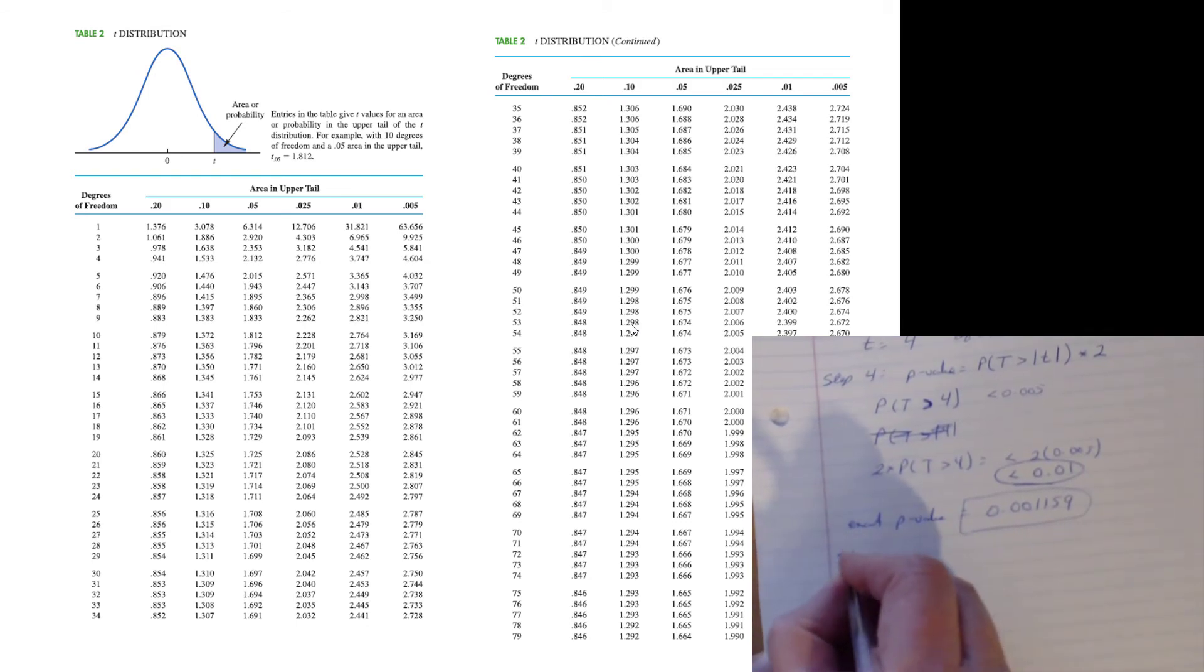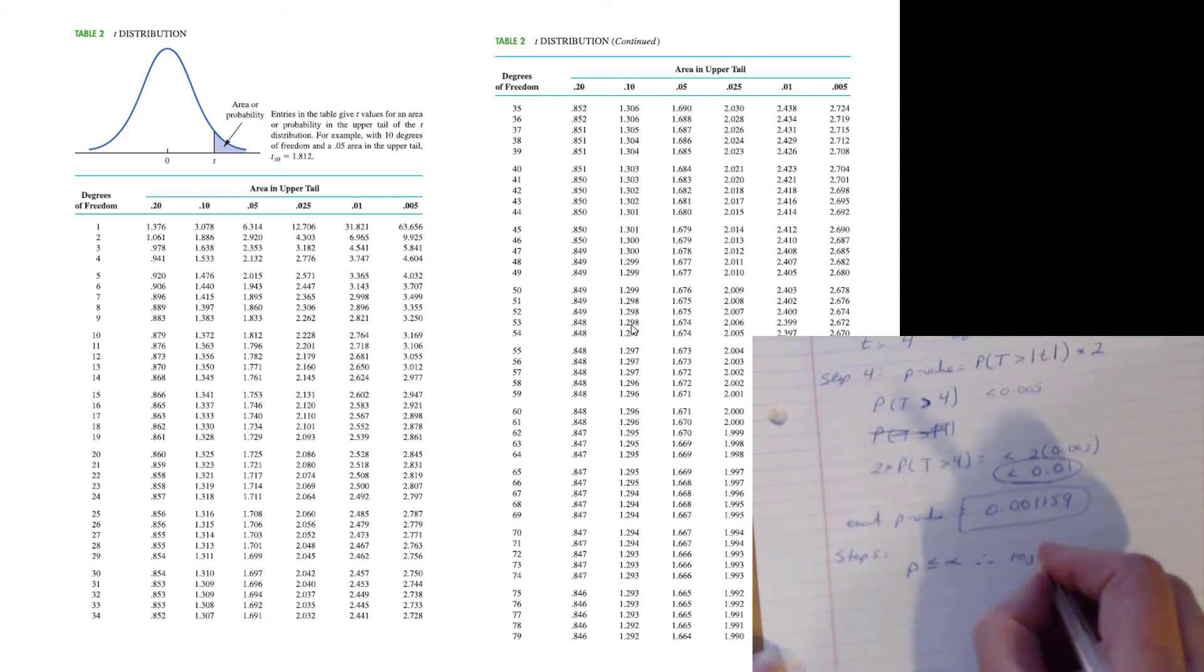Step 5 is unchanged regardless of which approach we use. The p-value in this case is definitely less than or equal to alpha - both are less than 0.02. Therefore, the risk of committing a type 1 error is below our threshold. Therefore, we are very comfortable in rejecting H-naught with an alpha of 0.02.